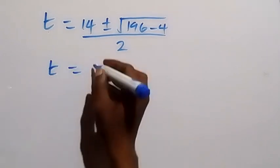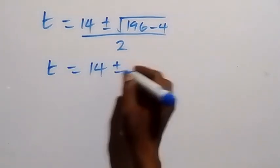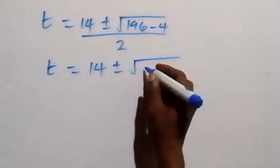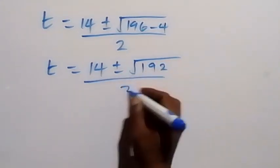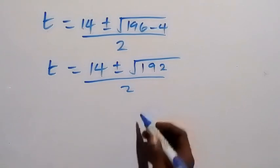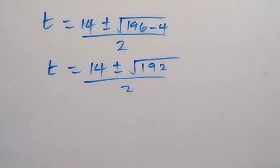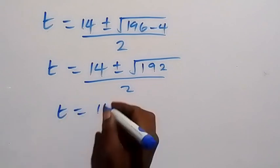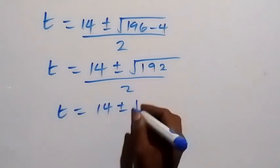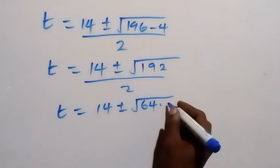And from here, t will equal 14 plus or minus square root of 192, all over 2. And we can rewrite 192 and separate it as 64 times 3. So we have t equals 14 plus or minus square root of 64 times 3.